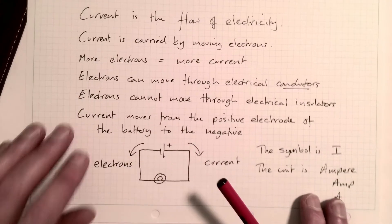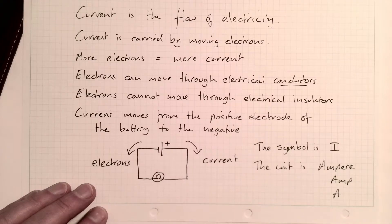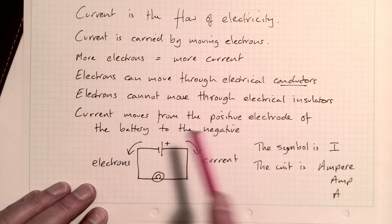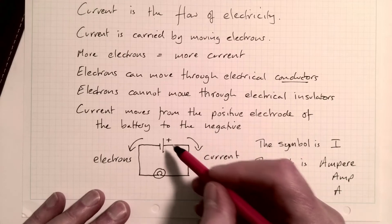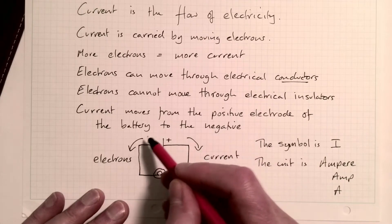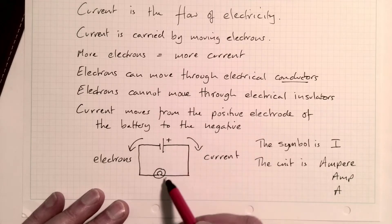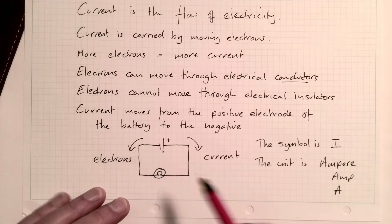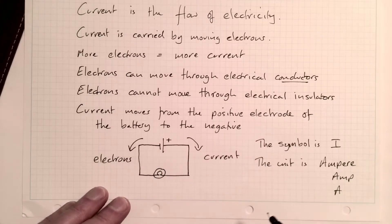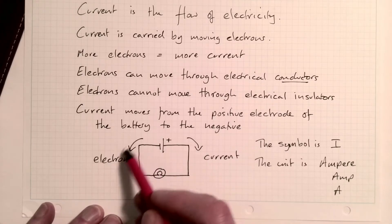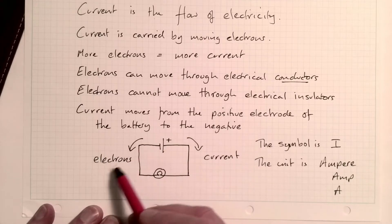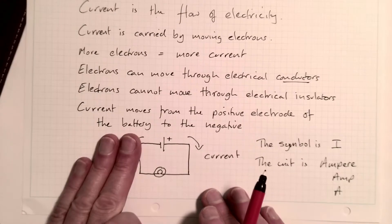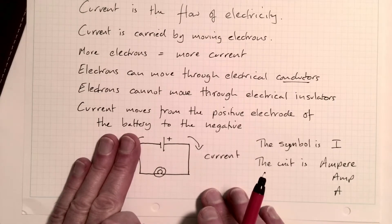In electronics terms, the current moves from the positive electrode of the battery to the negative. So when we talk about current, we are always talking about electricity flowing this way — it flows from the positive to the negative in a simple circuit with a light bulb in it. The particles that carry charge, which are the electrons, are actually moving the other way, but that's not called current — that's just the direction the electrons are moving. It seems confusing, but we don't need to worry about that unless we're doing chemistry.